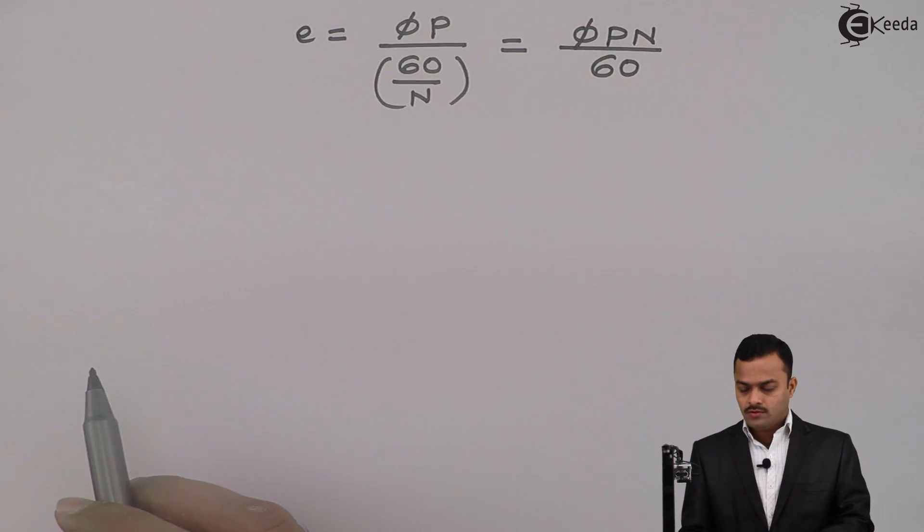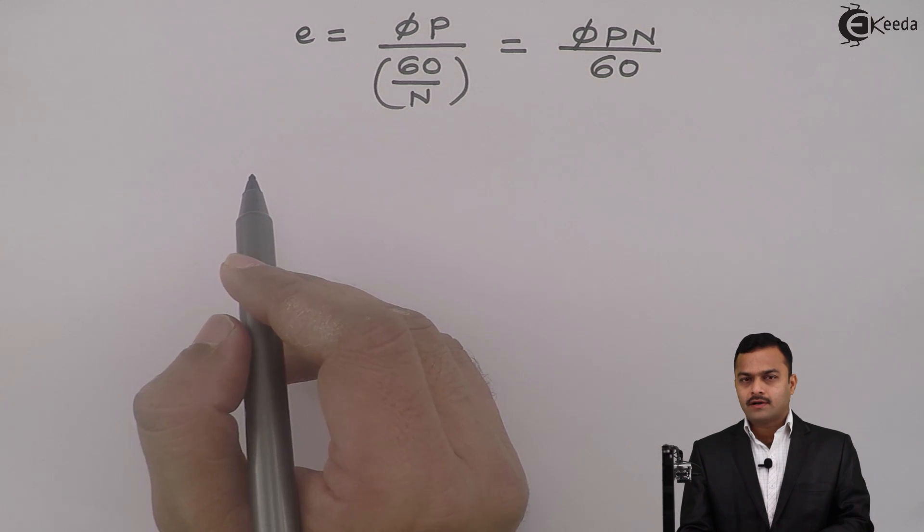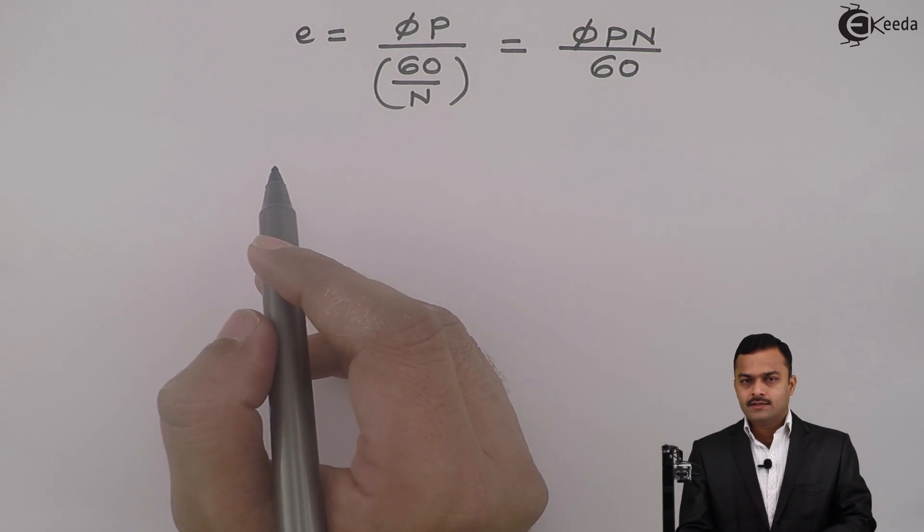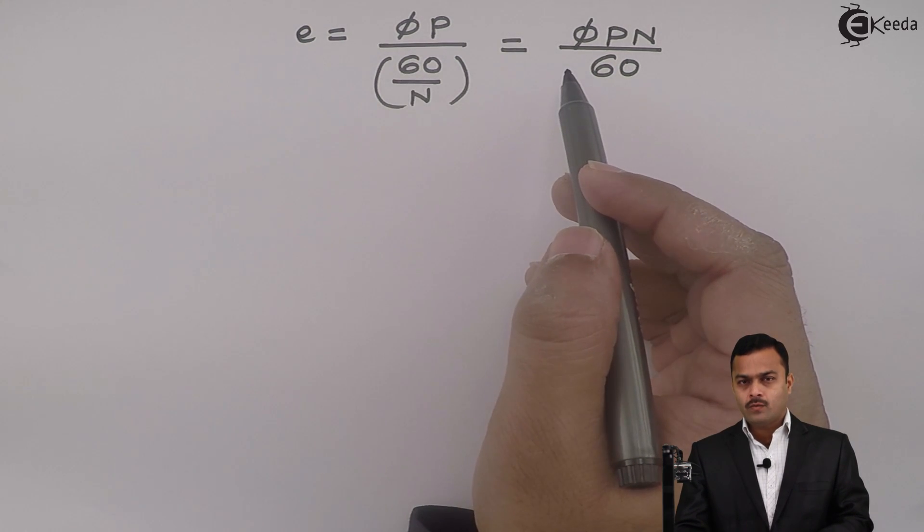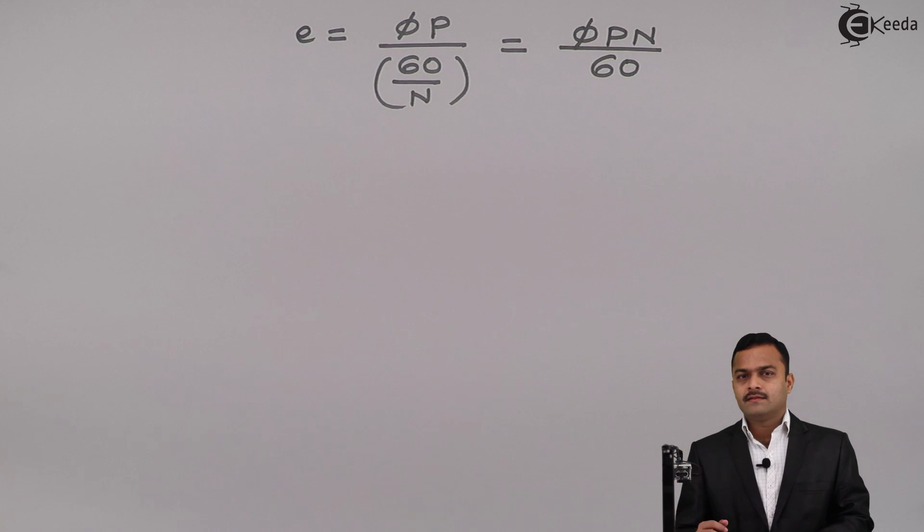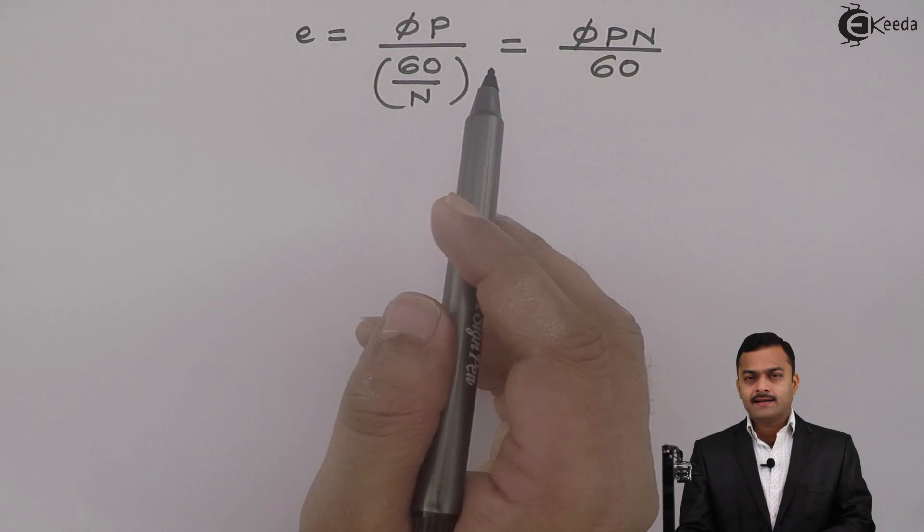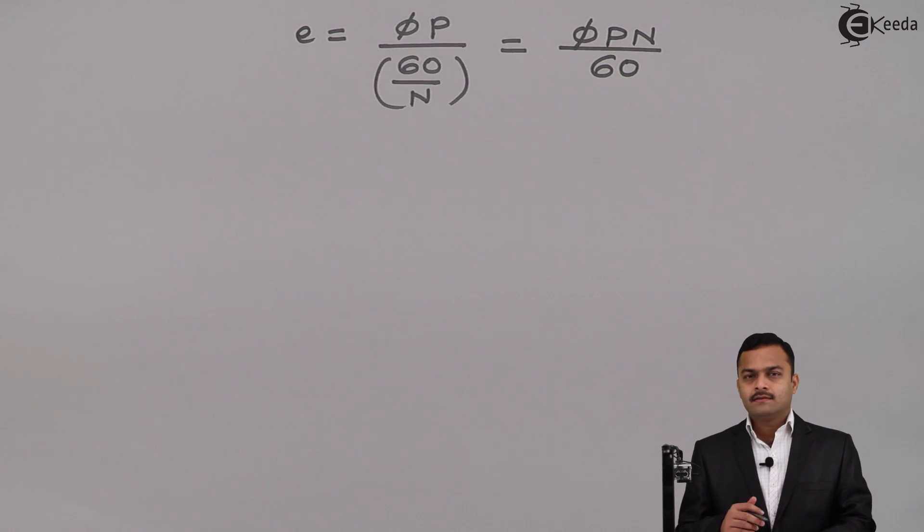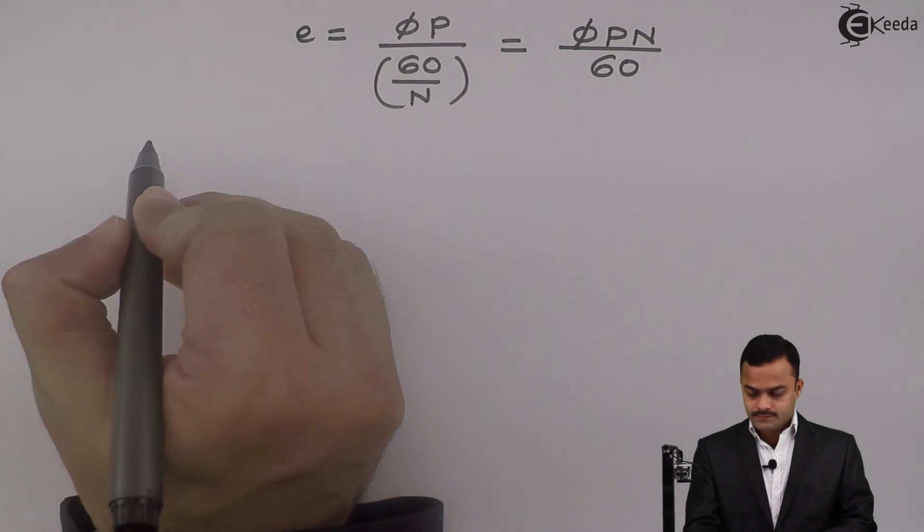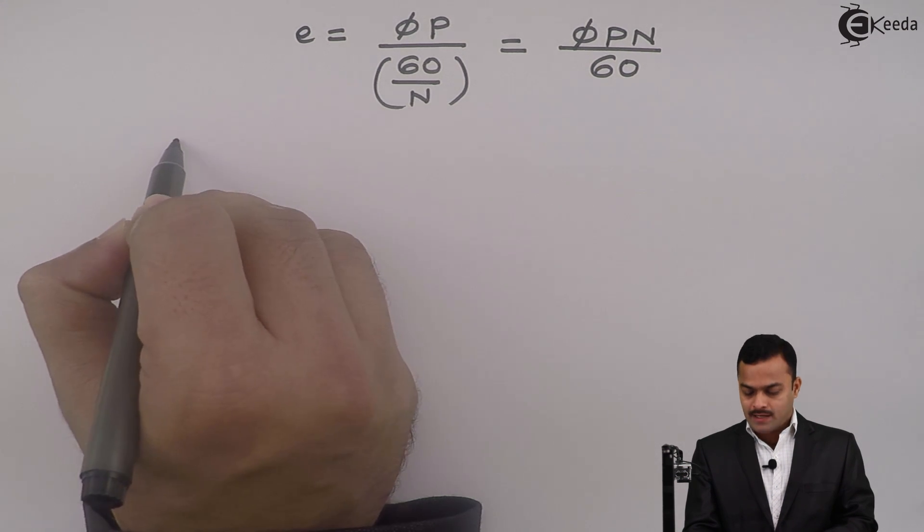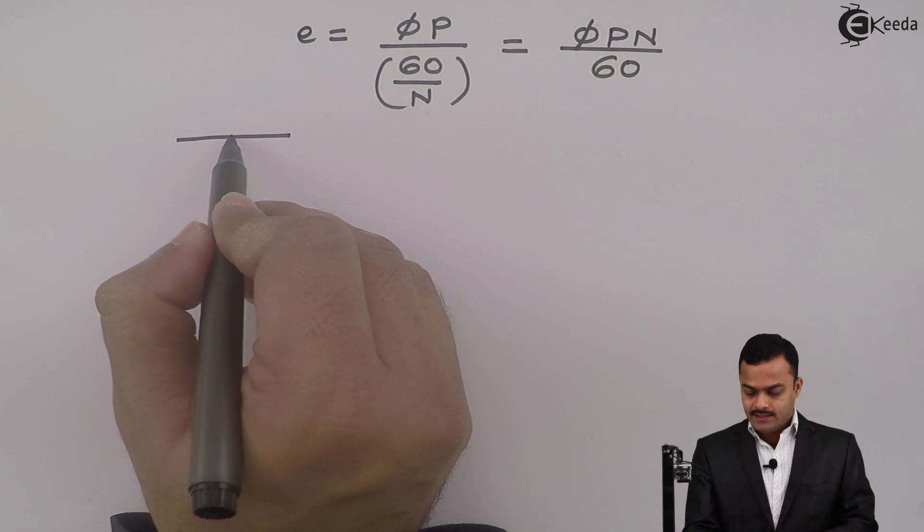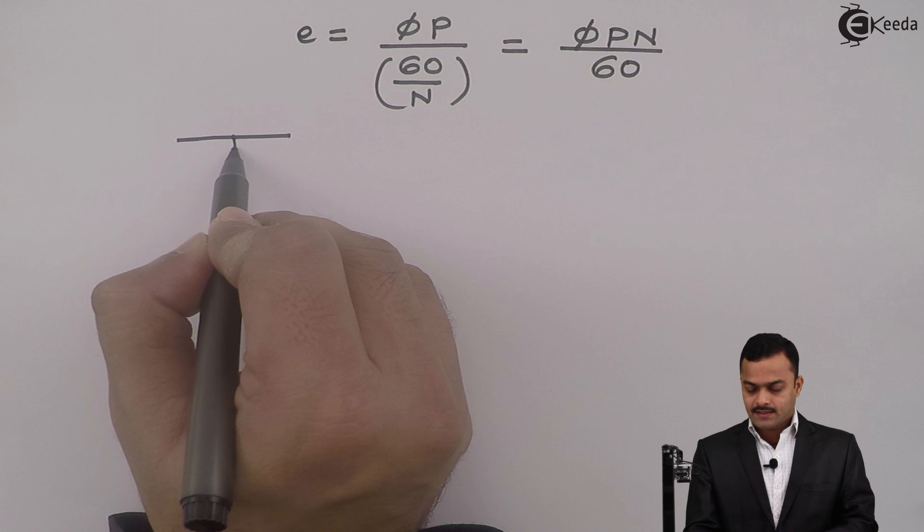So, for total number of conductors which are Z, EMF induced will be EMF induced by one conductor multiplied by number of conductors present. But, this conductor Z are arranged in a number of parallel paths. So, actually speaking, we have multiple parallel paths present and in each path, there are conductors.